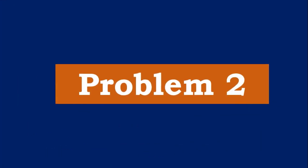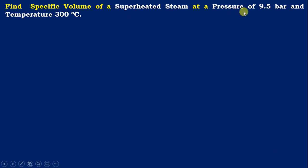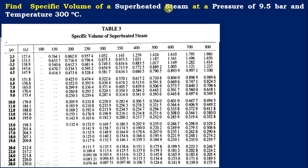Next, problem number 2: Find the specific volume of superheated steam at a pressure of 9.5 bar and temperature 300°C. From this problem, we can use the specific volume of superheated steam table, that is Table 3. At a pressure of 9.5 bar and temperature 300°C, you can see that the pressure 9.5 bar is not available in the steam table, so we have to do interpolation. However, the temperature is available, so keep temperature constant and do interpolation for pressure versus specific volume.